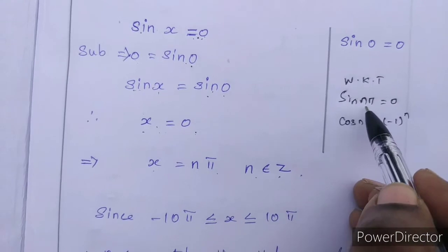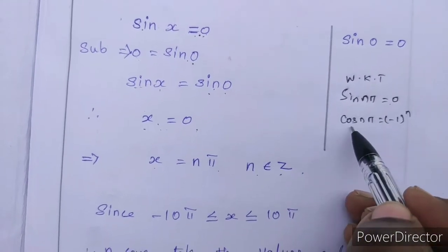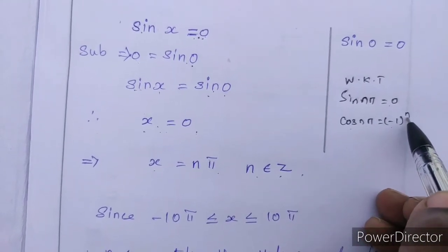We have sin(nπ) = 0 always and cos(nπ) = (-1)^n.